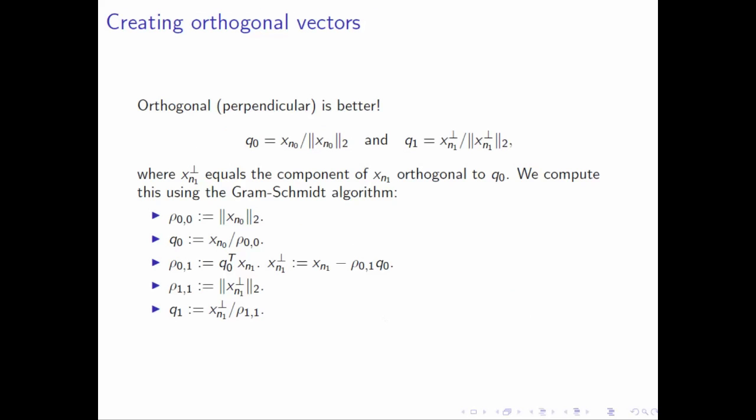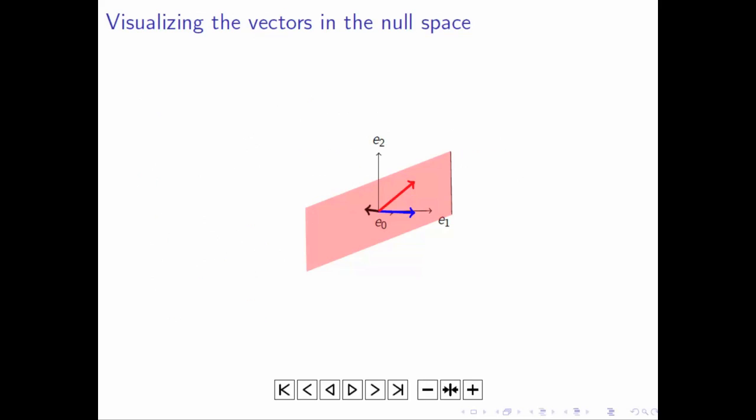If instead we go through a process called the Gram-Schmidt process, which we'll discuss in a subsequent section, we can change these two vectors into two vectors that are what's called mutually orthonormal. And what does that mean? Well, these vectors span the same space, but they are now orthogonal to each other, and they are both of length 1. And somehow that's much more pleasing.